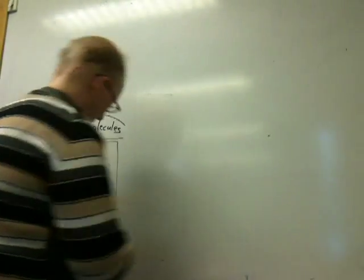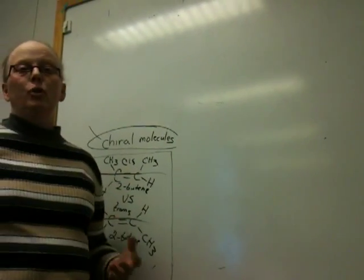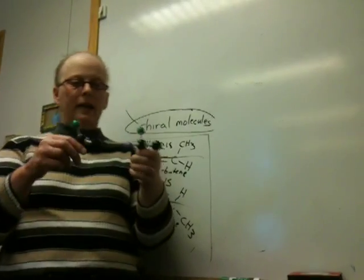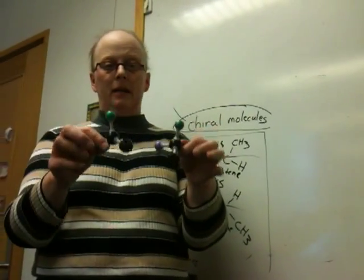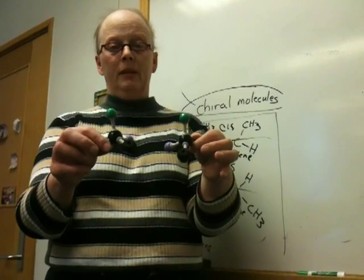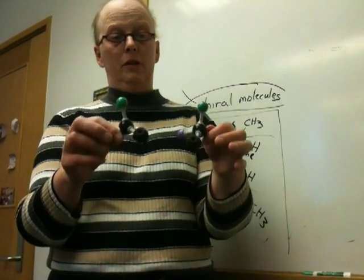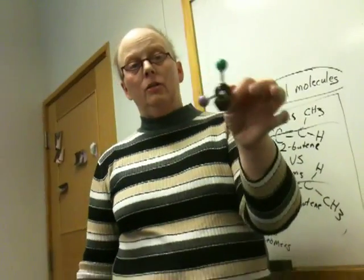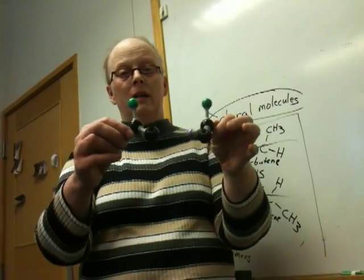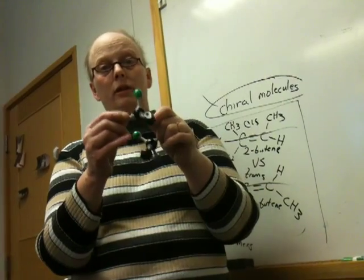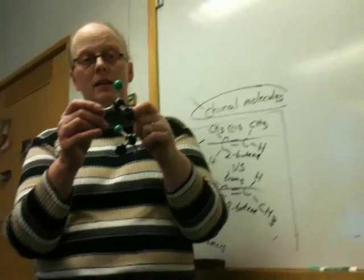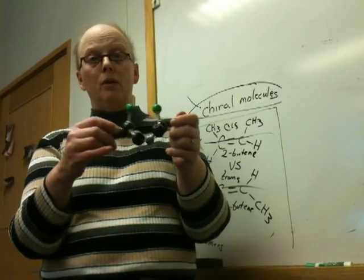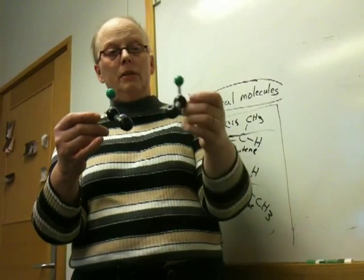What we want to do is expand this concept of chirality into molecules — we want to look at molecules. To begin this idea, we're going to look at these two molecules that I made using a molecular model kit. This molecule is chiral, like my hand. This molecule is chiral, like my hand. It is so irregularly shaped that it is non-superimposable on its mirror image. This molecule is the mirror image of this molecule.